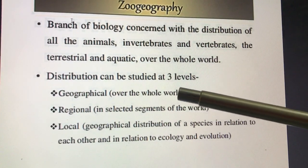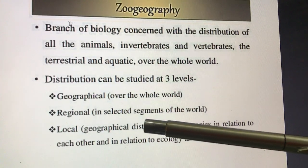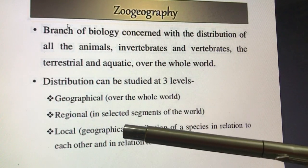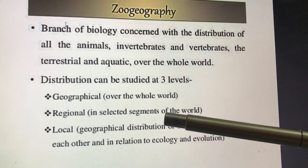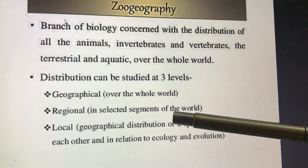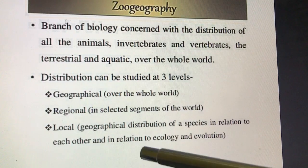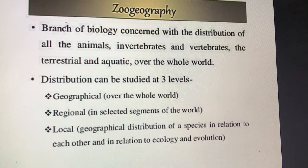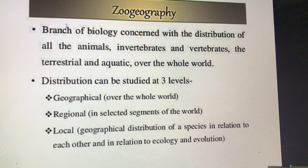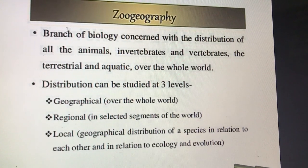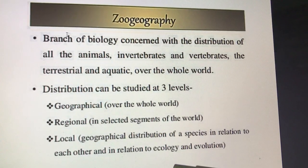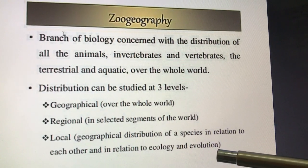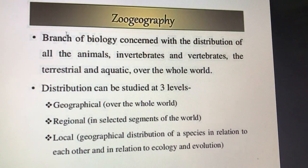इसको तीन levels पे study किया जाता है — Geographical, जो पूरे विश्व की बात करते हैं; Regional, जो एक selected segment में हम अध्ययन करते हैं; and Local. Local is the geographical distribution of a species in relation to each other and in relation to ecology and evolution. Ecology और evolution यह शब्द बहुत ही महत्व रखते हैं इनके distribution pattern में।